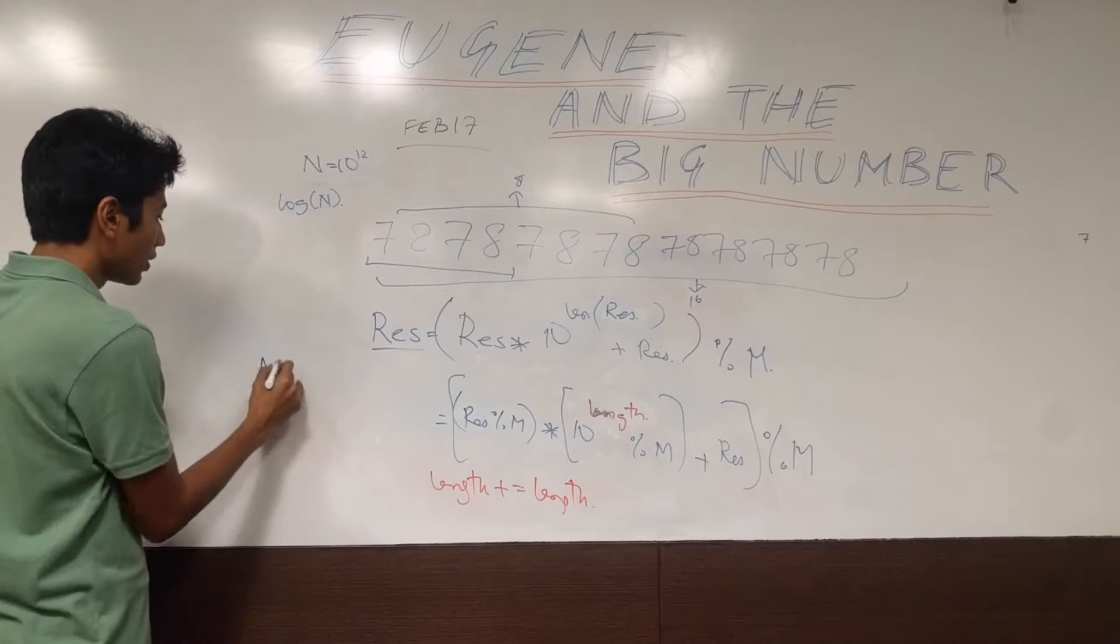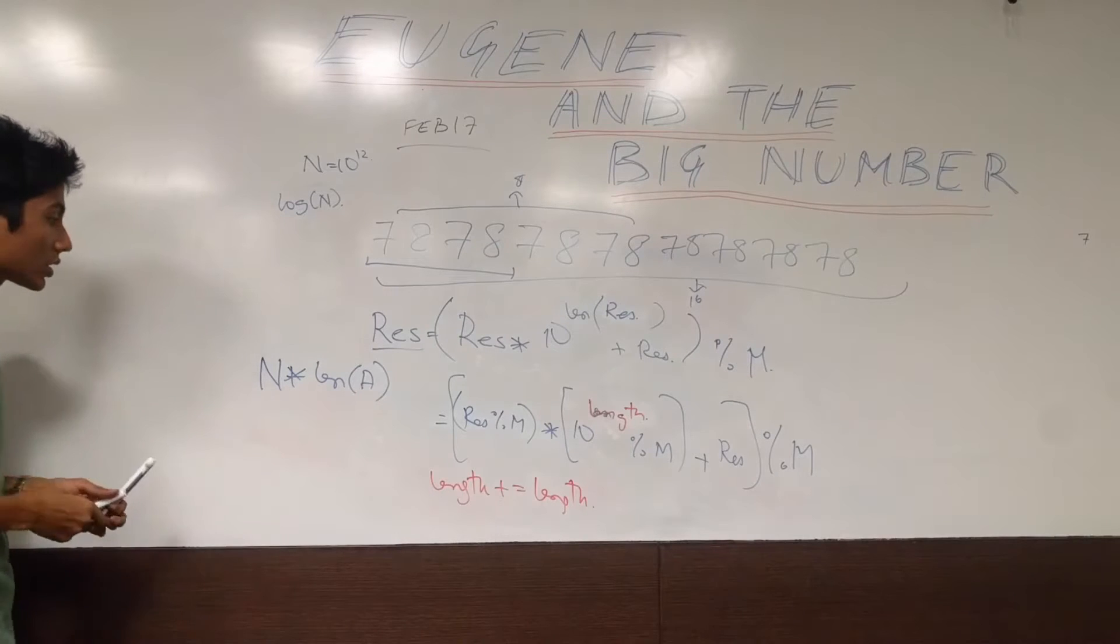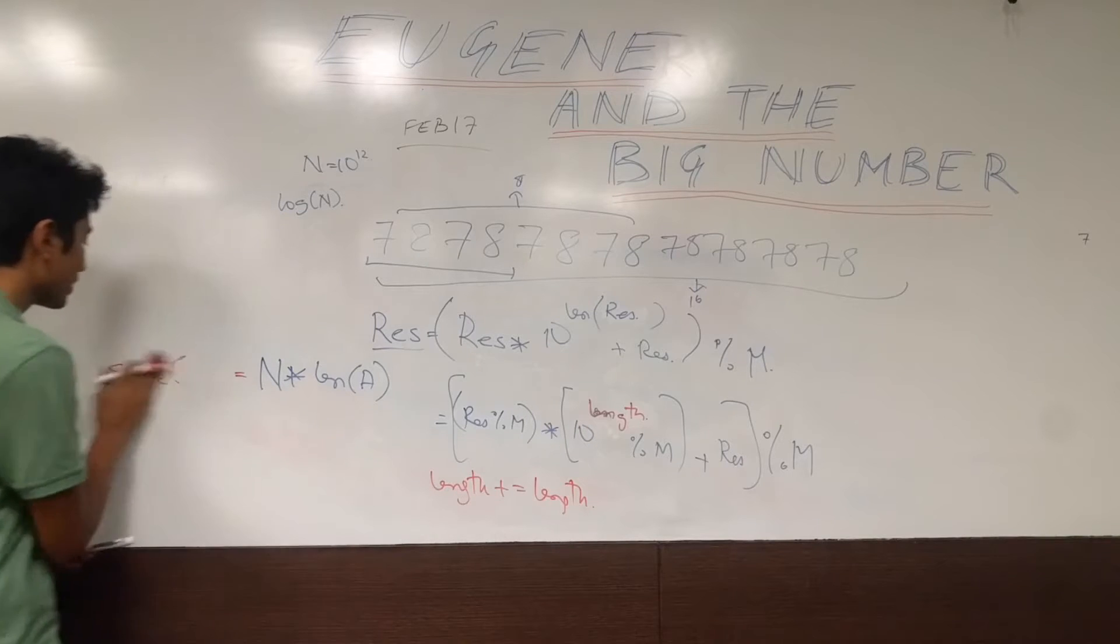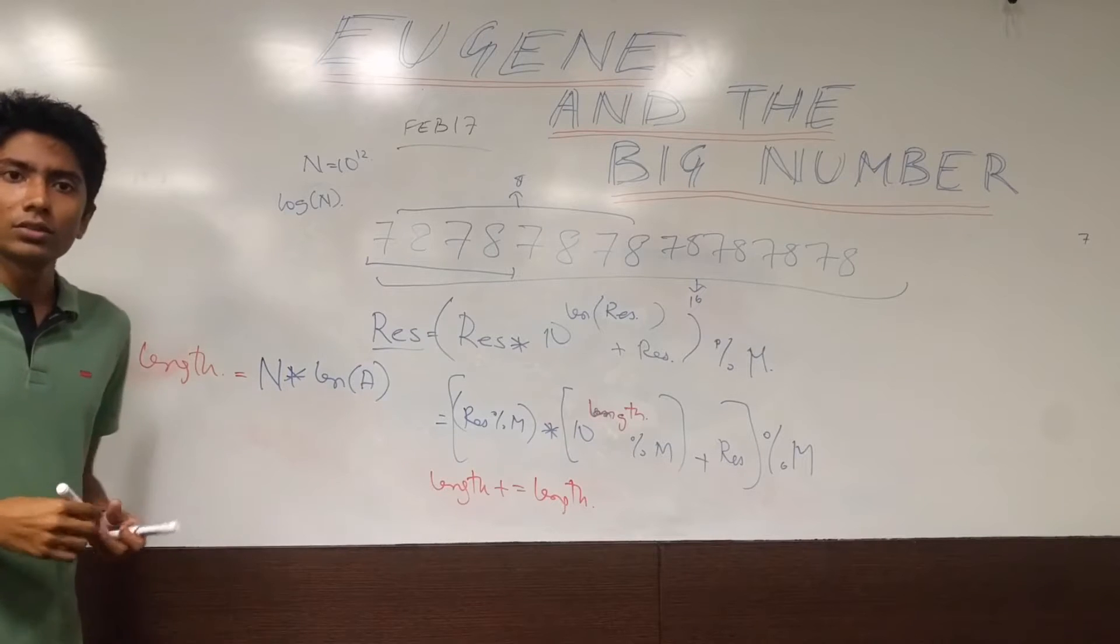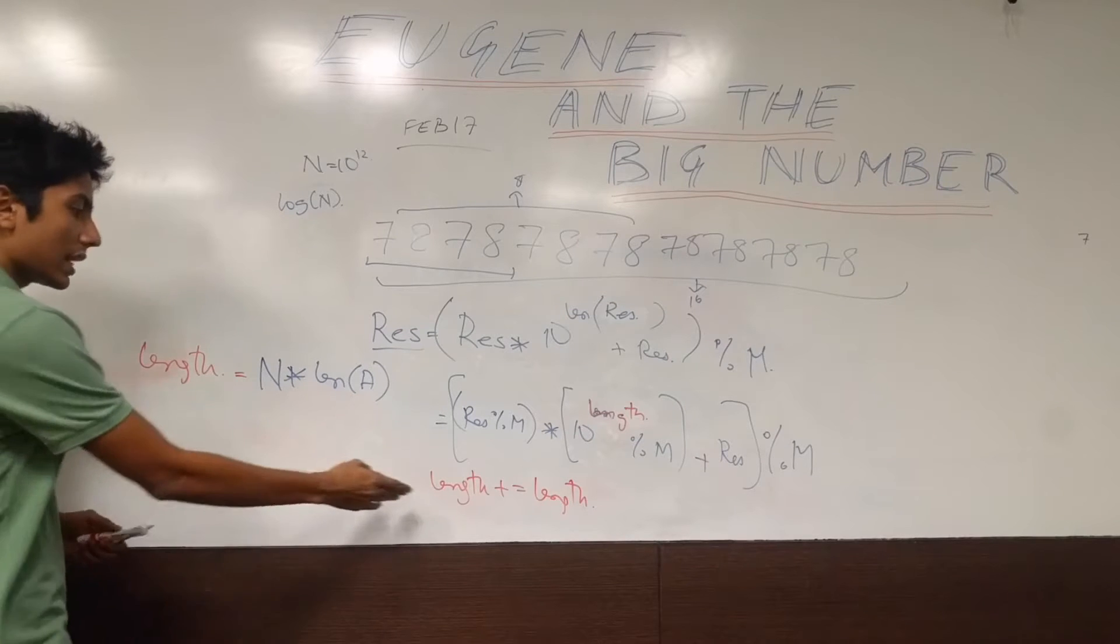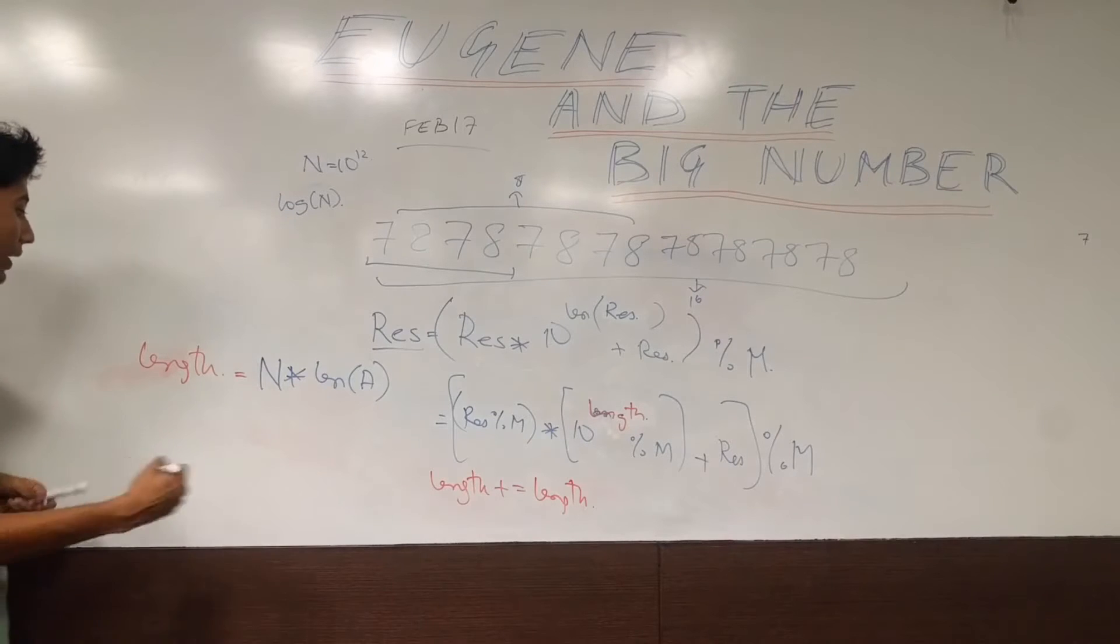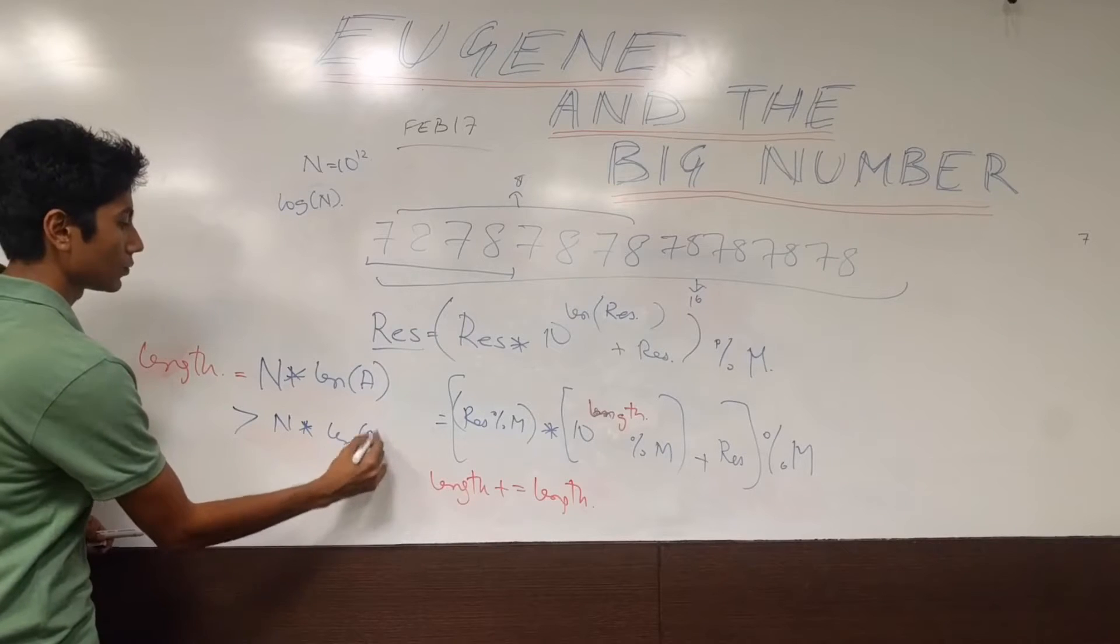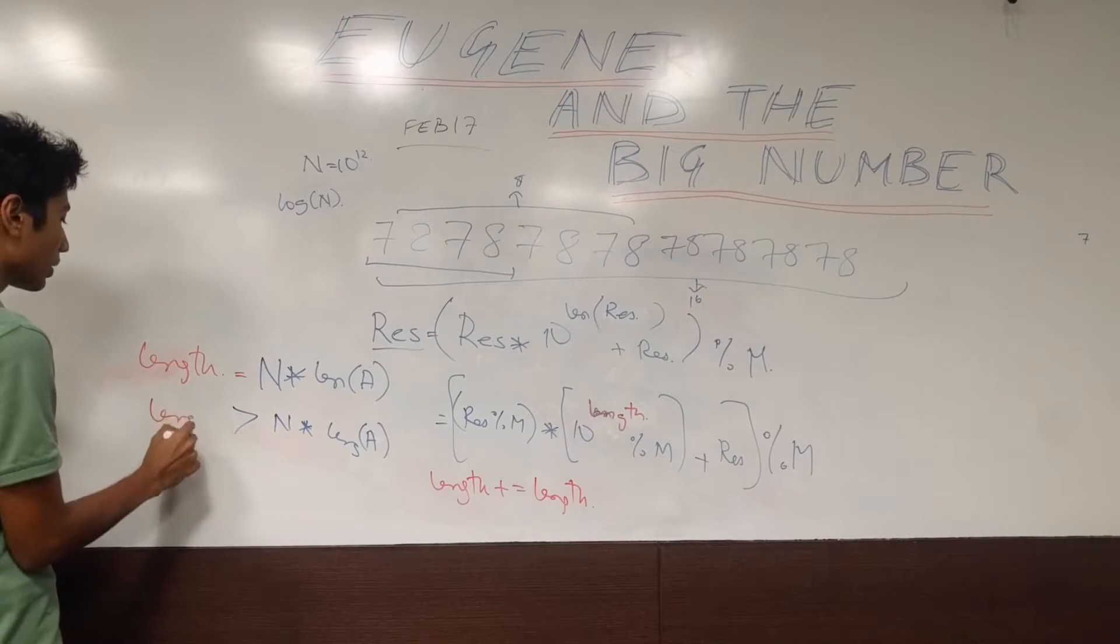So n into length of a, when that is equal to the size of result, so when that is equal to length, then you are done. Then you know that you are done. But because length is increasing exponentially, you might actually overshoot. And there might be the point that length is greater than or equal to n into length of a. In that case, you will need to do some hocus pocus with binary.